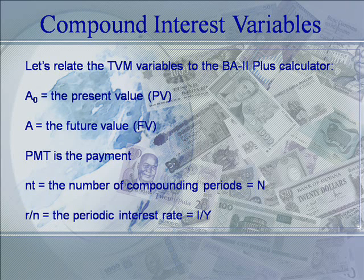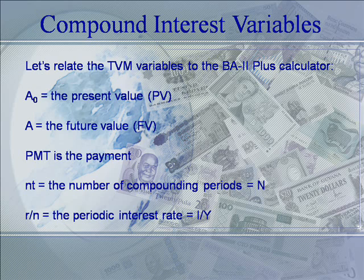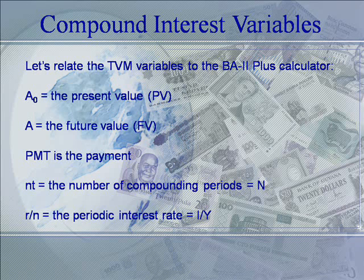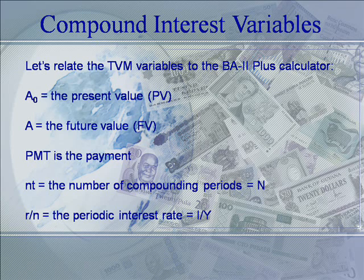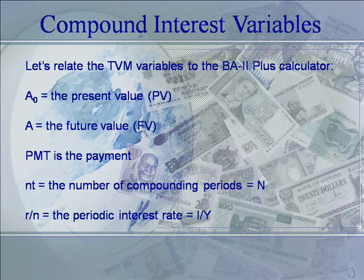Now, let's relate the variables in the equation to the keys on the calculator. a sub 0 is the amount at time 0, or present value. a is the amount in the future, or future value. Little r divided by n equals the periodic interest rate, or I/Y. Little n times t equals the total number of payments or compounding periods — that is, capital N on our calculator. And PMT, of course, equals the amount of the payments.